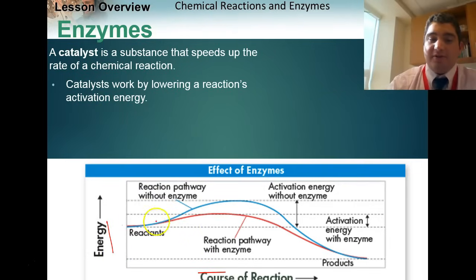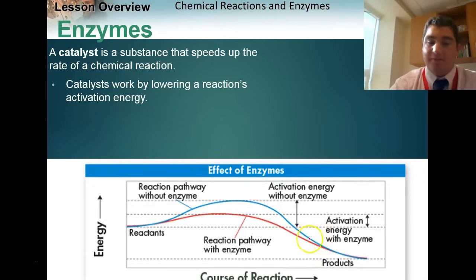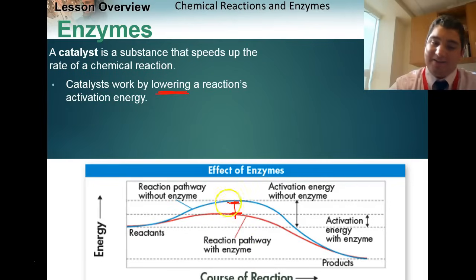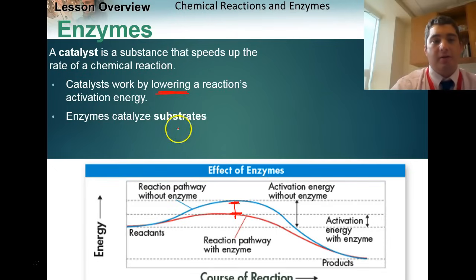Looking at this graph, energy is on the y-axis and time on the x-axis. The blue line shows a chemical reaction without an enzyme — there's a higher activation energy hump. The red line shows the reaction with an enzyme or catalyst lowering the activation energy, requiring much less energy to get started. The difference between the two lines represents the energy the enzyme eliminated.